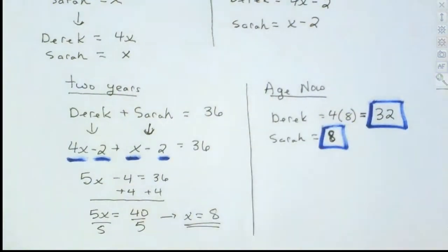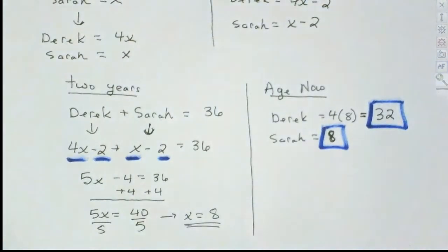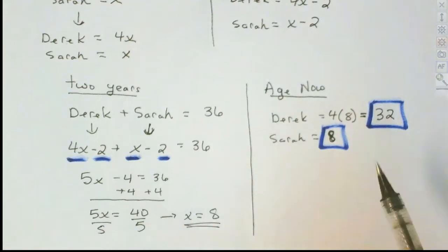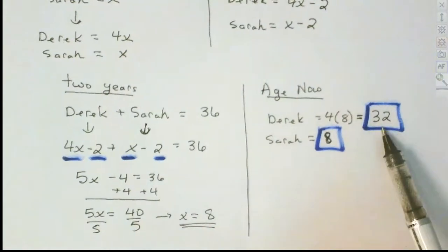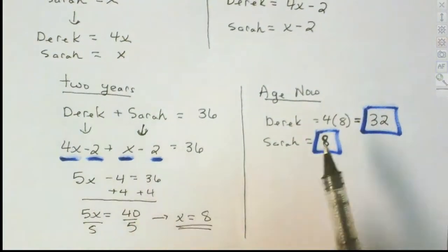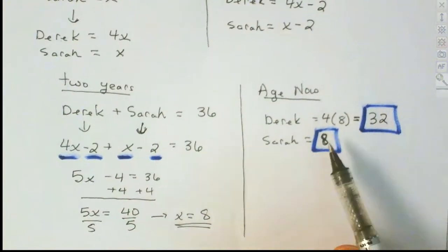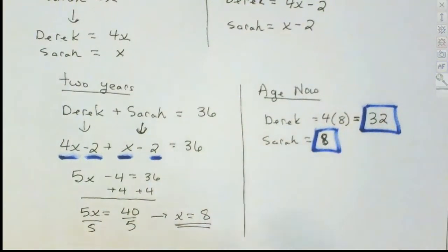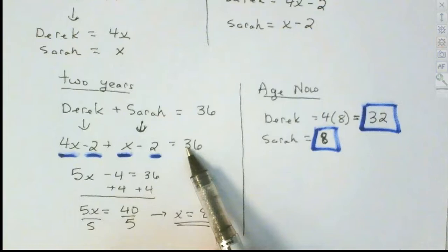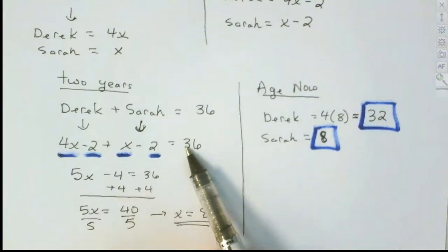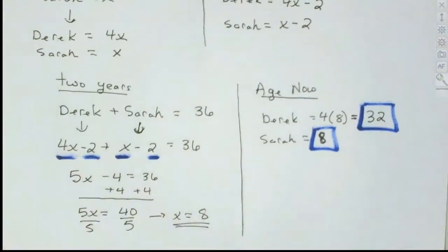To check: two years ago their ages should add up to 36. Two years ago Derek would have been 30, and Sarah would have been 6. 30 plus 6 gives 36, so it all makes sense and goes together.